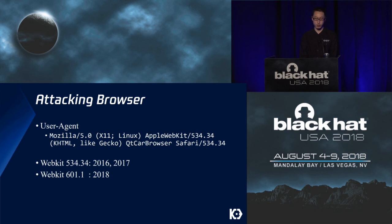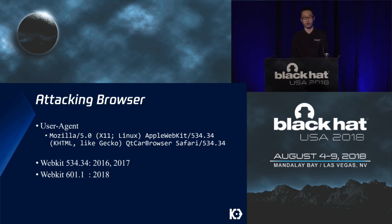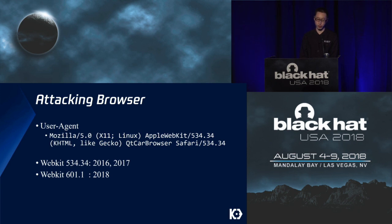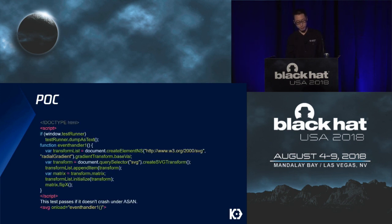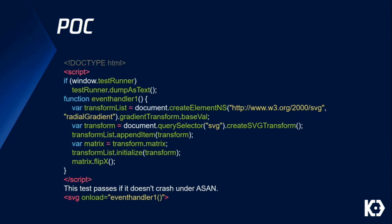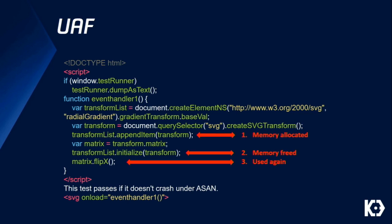At last year's Black Hat we explained how we utilized two vulnerabilities in WebKit to exploit the browser of Tesla. After that, Tesla fixed these two vulnerabilities. However, the version of WebKit still kept on 534.34 for a long time. This time we utilized only one vulnerability to achieve arbitrary code execution. This is the proof of concept — it has been public for many years. It is actually a classic UAF vulnerability related to a transform list element.